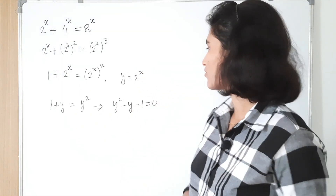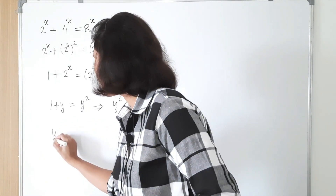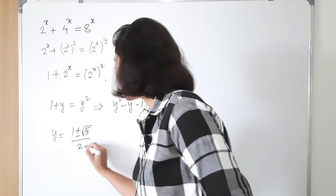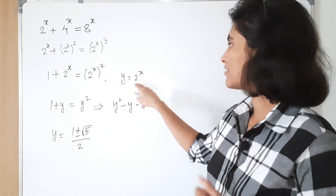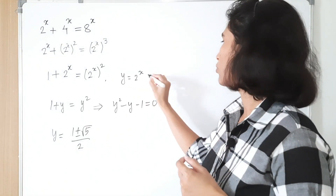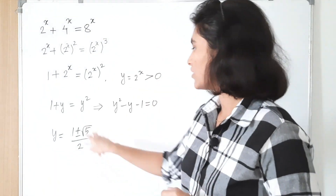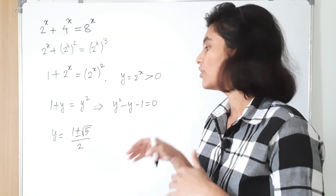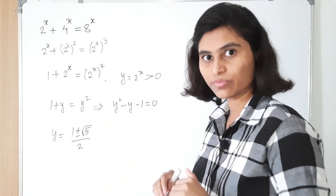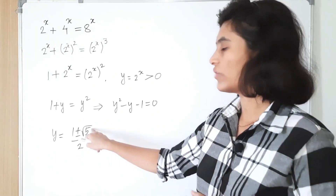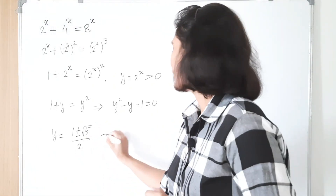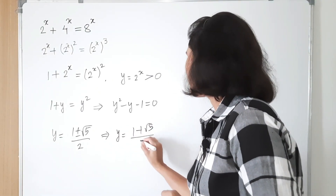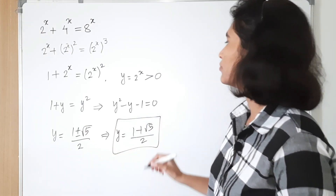The roots of this equation are y equals 1 plus or minus square root of 5, divided by 2. Now we know that y equals 2 raised to x, which is always positive. The value 1 plus square root 5 over 2 is positive, whereas 1 minus square root 5 over 2 is negative, so we discard the negative value. Therefore y equals 1 plus square root of 5 divided by 2.